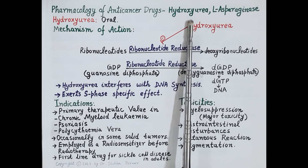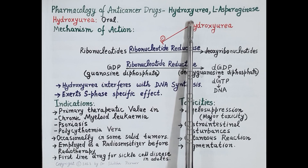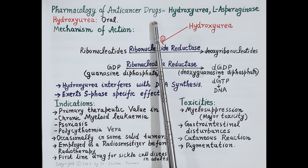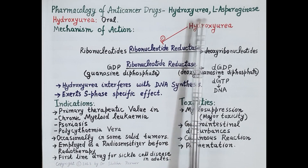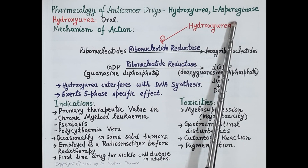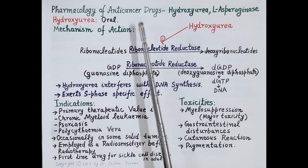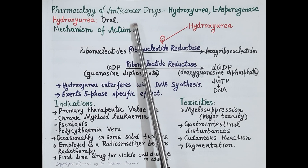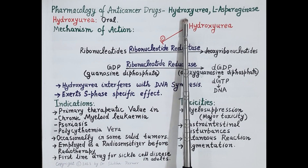Hello students. In today's video we are going to study pharmacology of two miscellaneous anti-cancer drugs: hydroxyurea and L-asparaginase. As we know, cancer is a disease that is caused by rapid, abnormal, uncontrolled multiplication of cells.